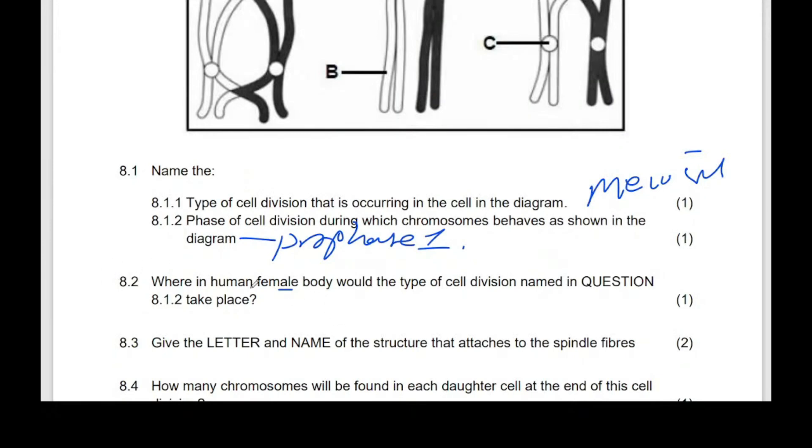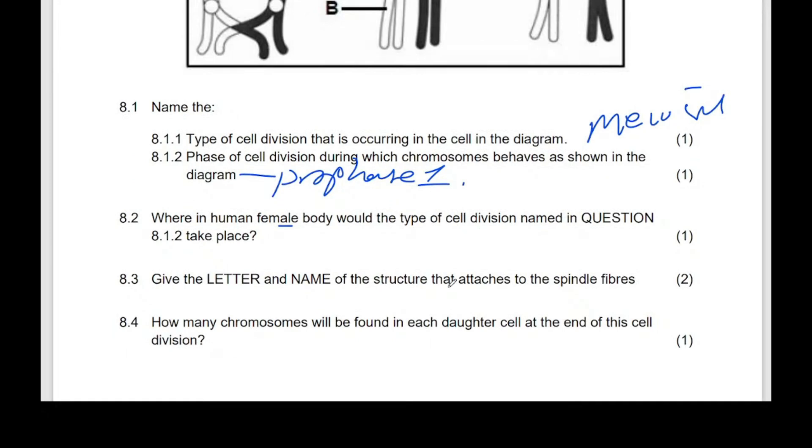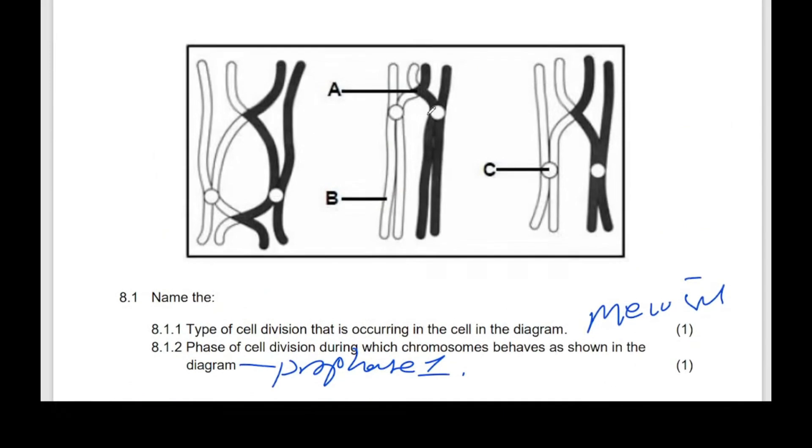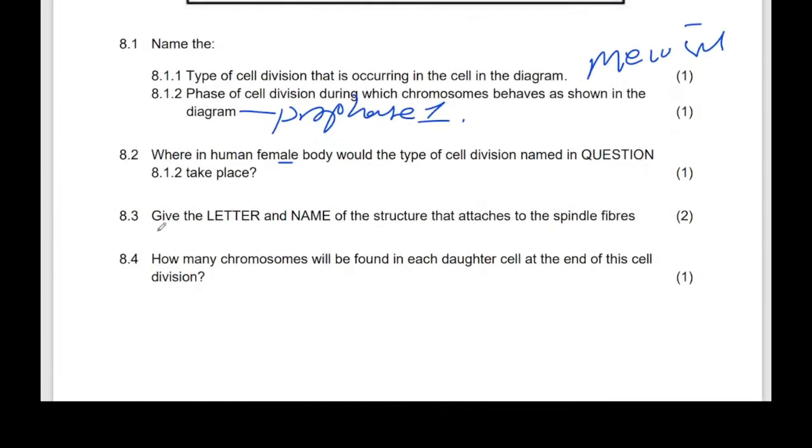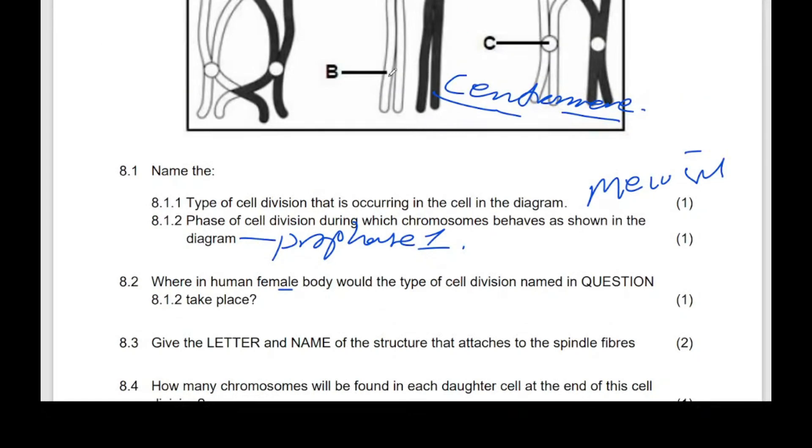They're saying give the letter and the name of the structure that attaches to spindle fibers. We talked about it. This, C, and is centromere. There's some students who write this spelling very wrong. This is centromere, centromere, that's what it means. They're saying give the, and we're done. The answer is C, and then the name is centromere.